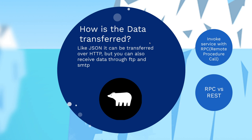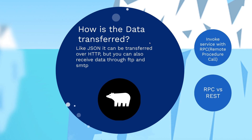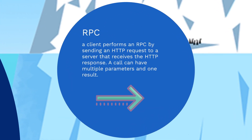To invoke these services, it uses something called RPC — Remote Procedure Call. A client performs an RPC by sending an HTTP request to a server that receives the HTTP response. So you're sending a request and you're getting a response. A call can have multiple parameters in one result.